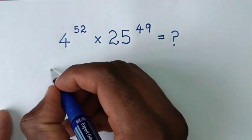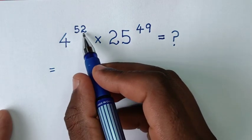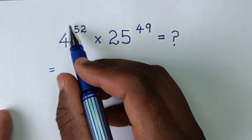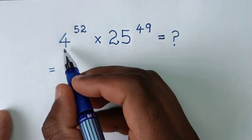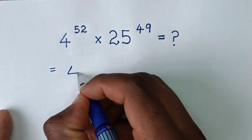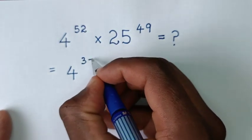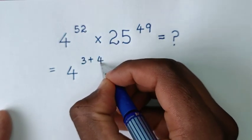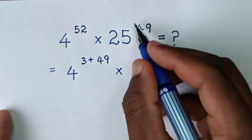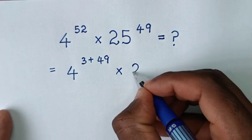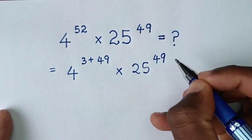So it will be equal to: from here, 4 power of 52 — this power of 52 will be split to have a common power of 49. So 4 power of 52 is the same as 4 power of 3 plus 49, then times 25 power of 49.